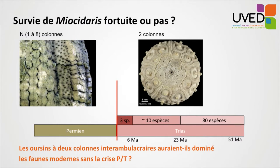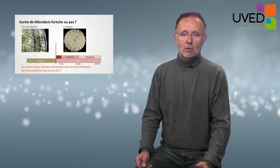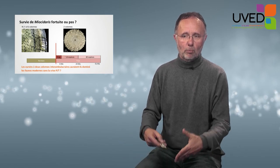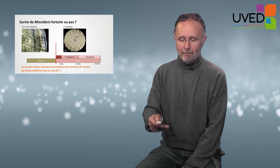Now, did the survival of the urchin happen by chance or not? Urchins from the primary era have many interambulacral plates — very many plate columns, as you see on the left. The surviving urchins are the ones with only two interambulacral plate columns, whereas the others have many more columns. Does it mean that the urchin with only two columns of interambulacral plates survived because of that? What would have happened without the crisis? Would the urchins have had many more plates? We don't know the answer to that question.